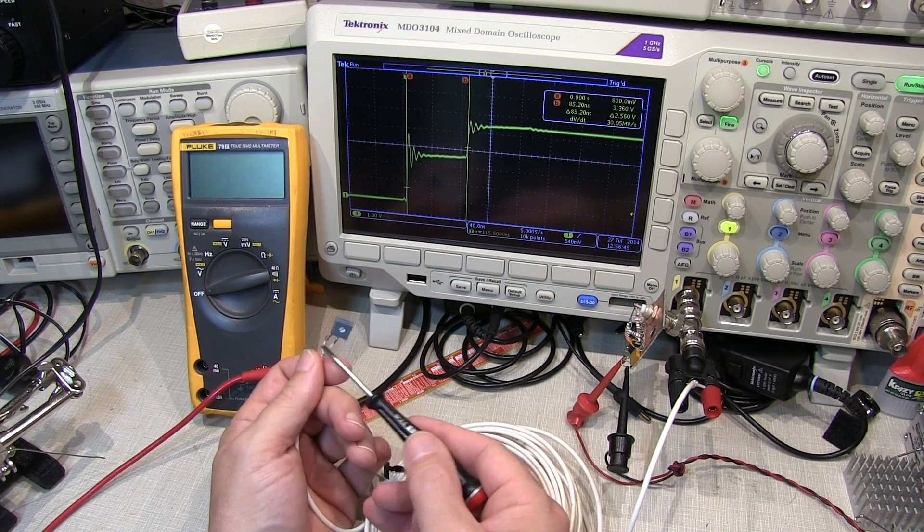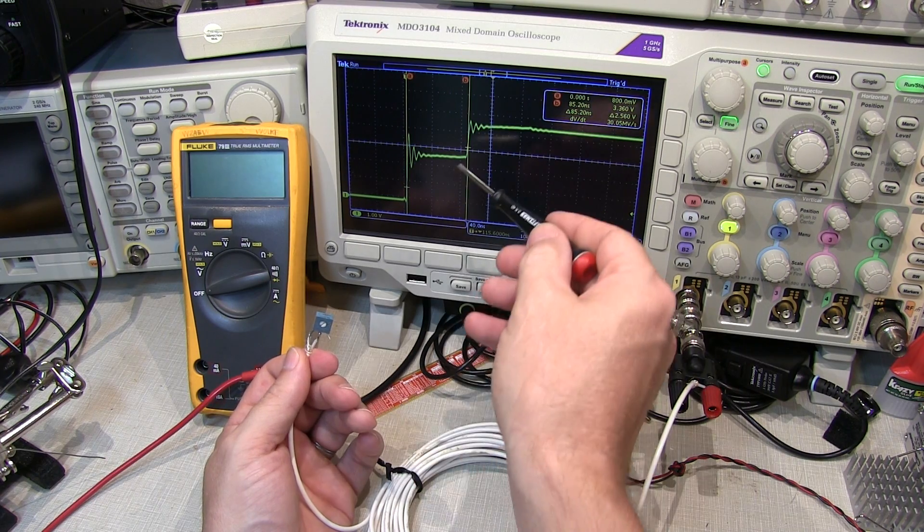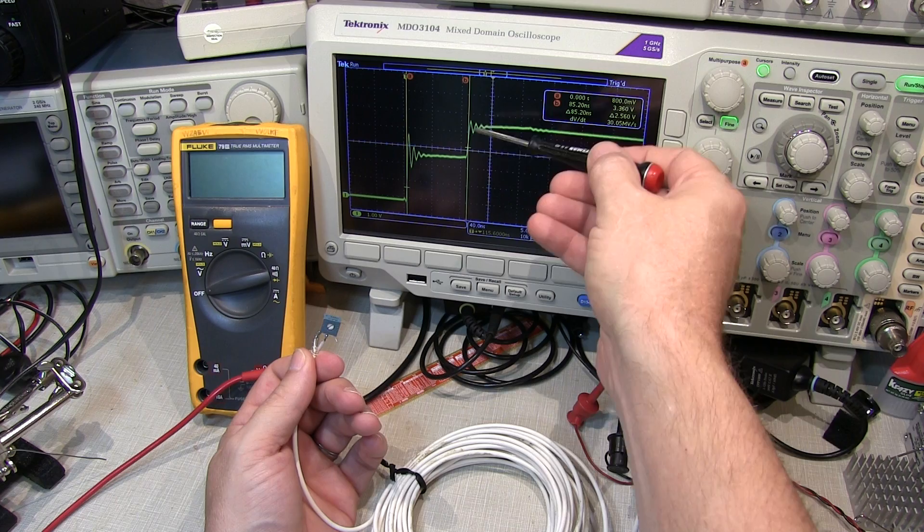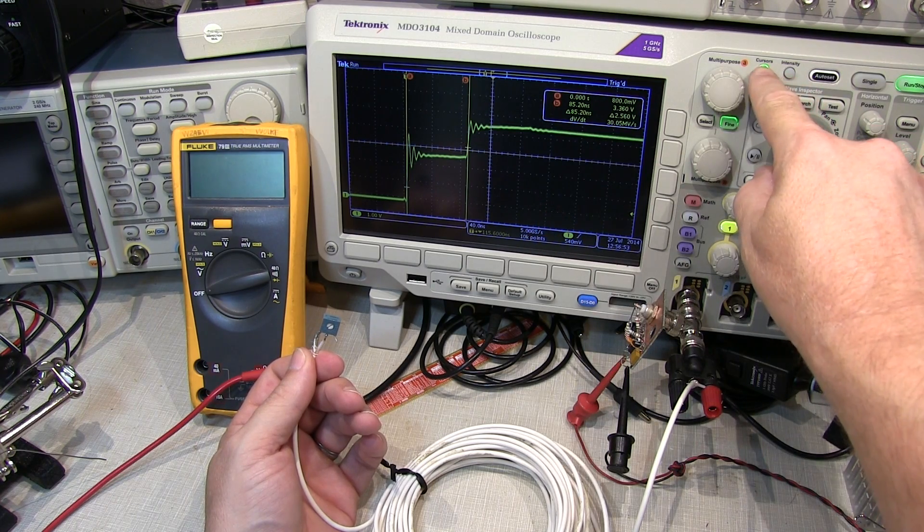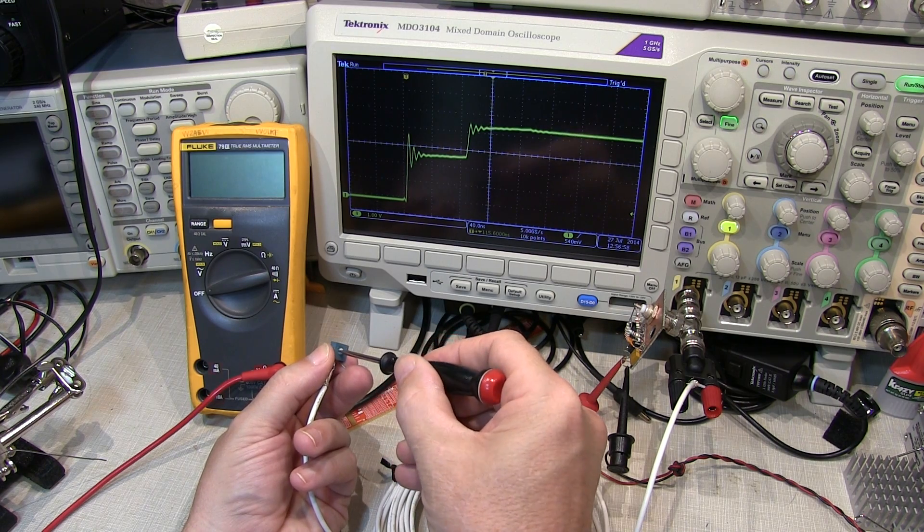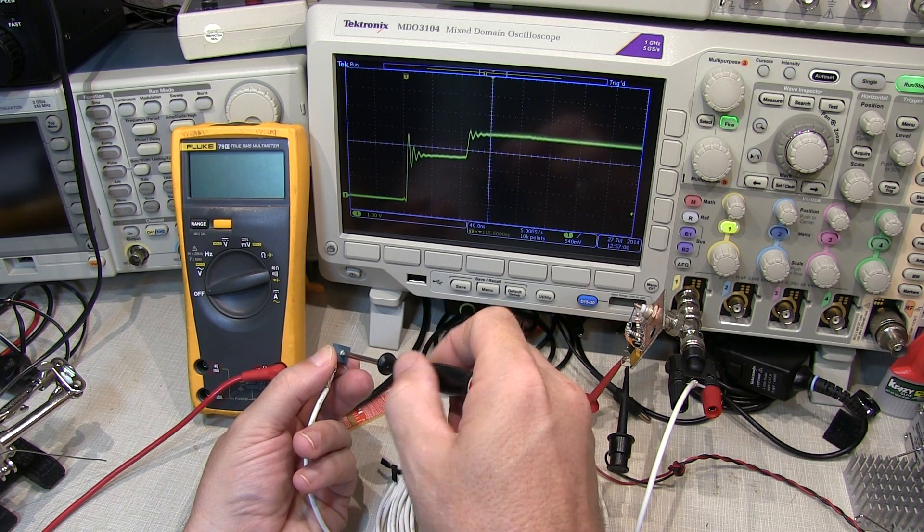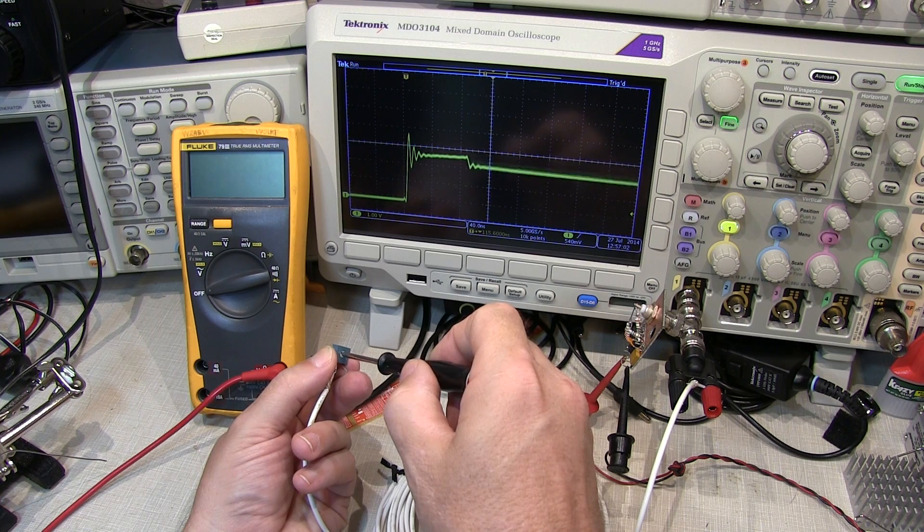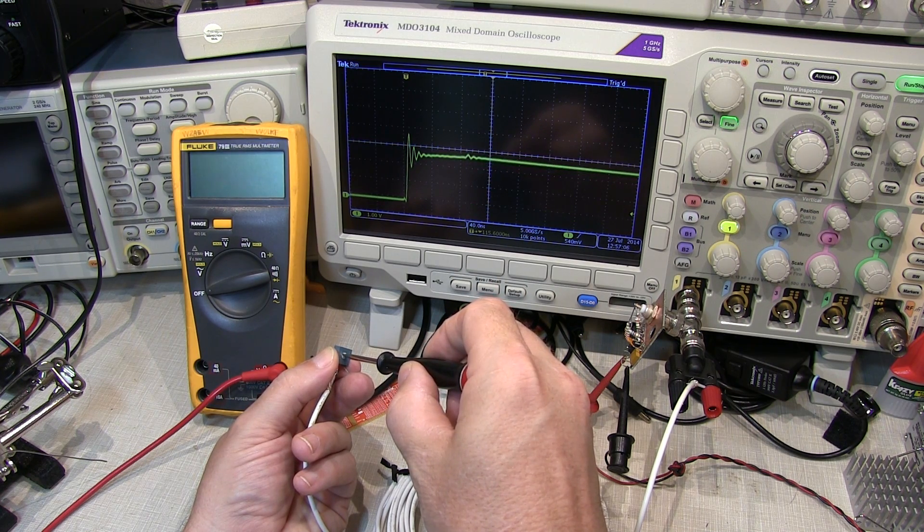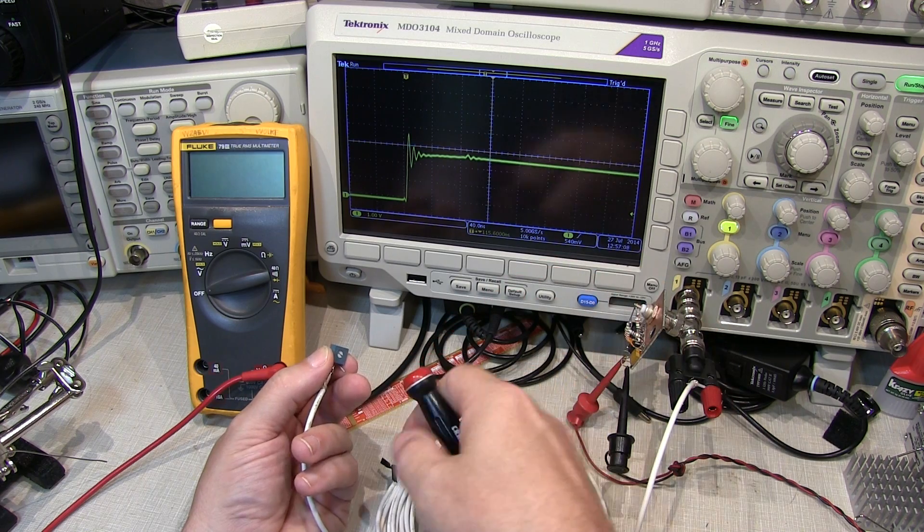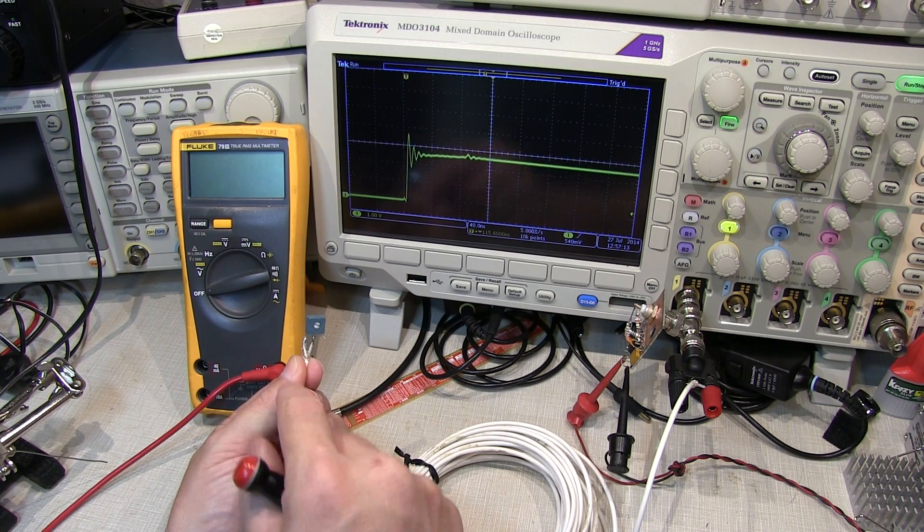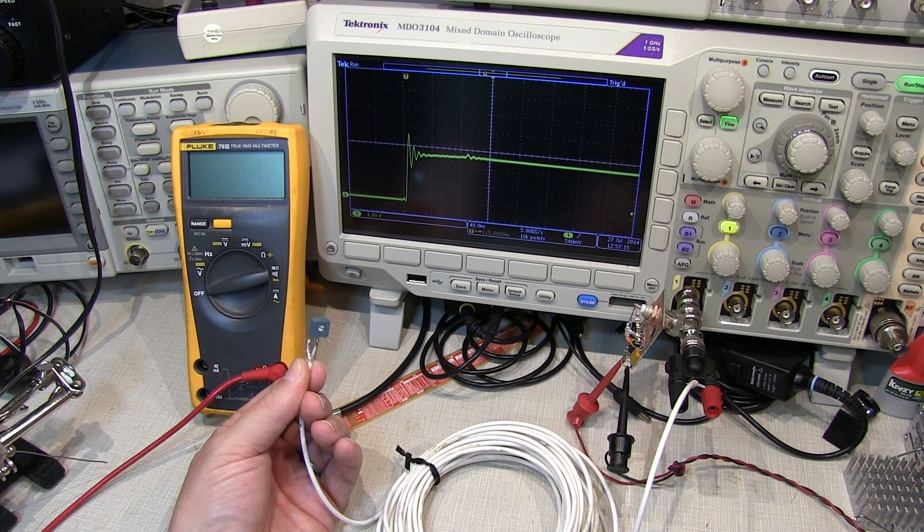Now when the termination impedance equals the coax impedance, there will be no reflection. So all we need to do is adjust this resistor until the reflection goes away. Now let's take the cursors off here and stick a screwdriver in here. As I adjust that resistor value, you can see the value of that reflection moving back and forth. And if I get it so that it's basically a flat line right there, now the resistance of this potentiometer is equal to the coax impedance. We just need to go measure that.